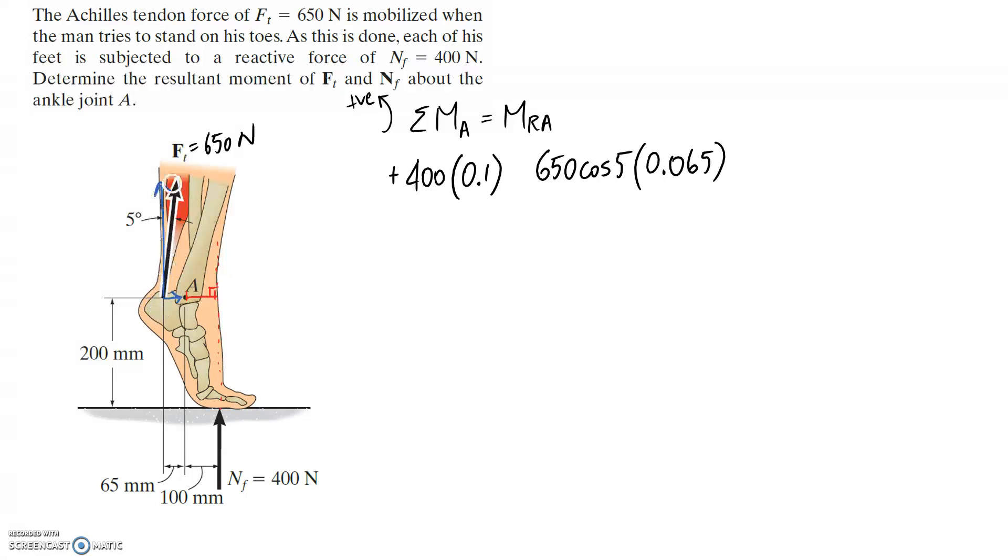We now need to think about the direction that it's going to try and push us. This one is going to try and push us this way around point A. Remember, that's our point of interest. So if it's going this way, that is clockwise. That's the opposite of our sign convention, so it's going to go in as negative.